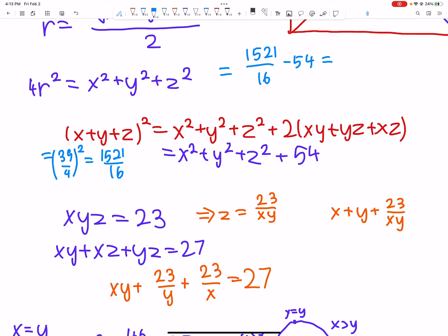That's equal to this. And this is, what's 54 times 16? That's 540 plus 324, so 864. So, 1521 minus 864 over 16. And that becomes 657 over 16. But be careful, we're trying to find R squared, not this, so we divide it by 4.